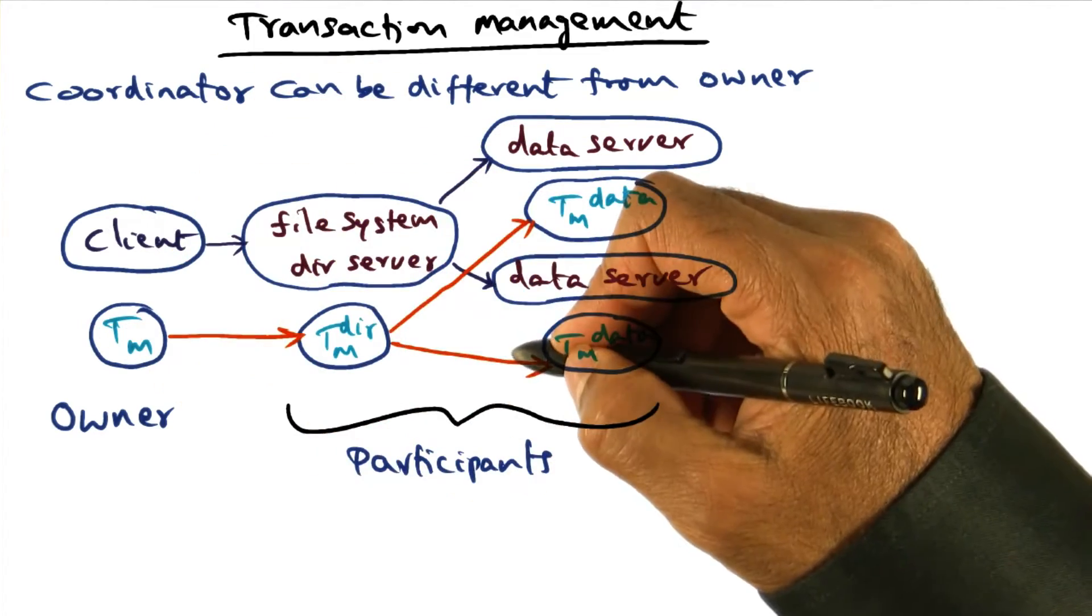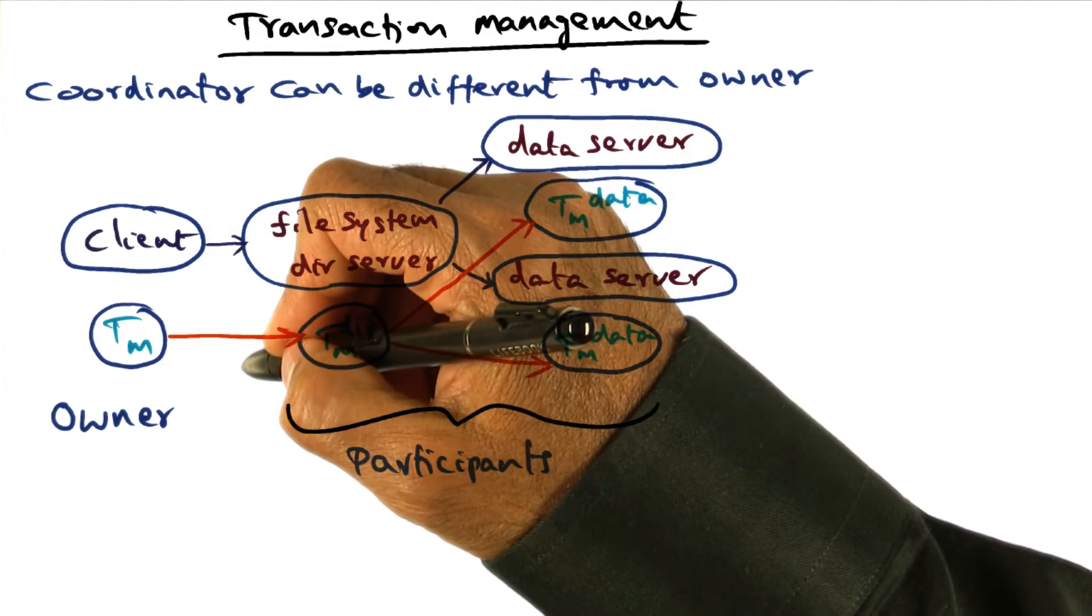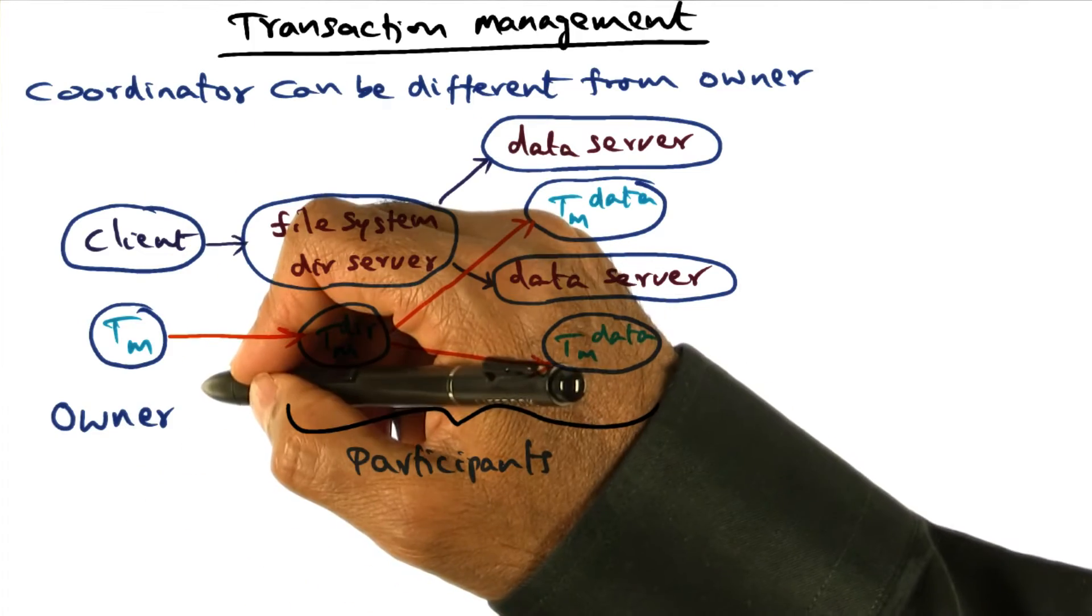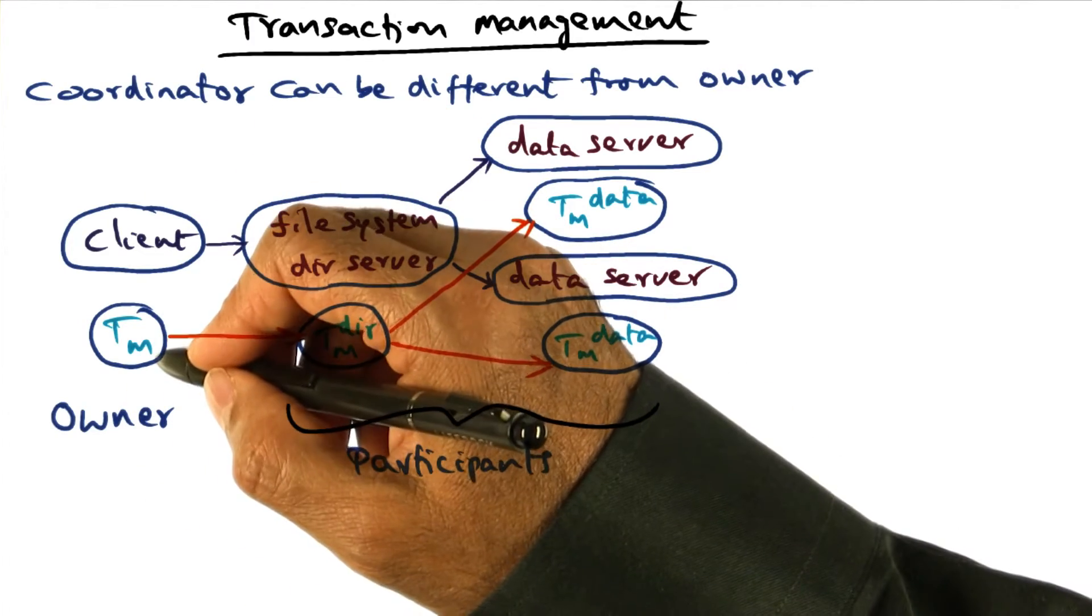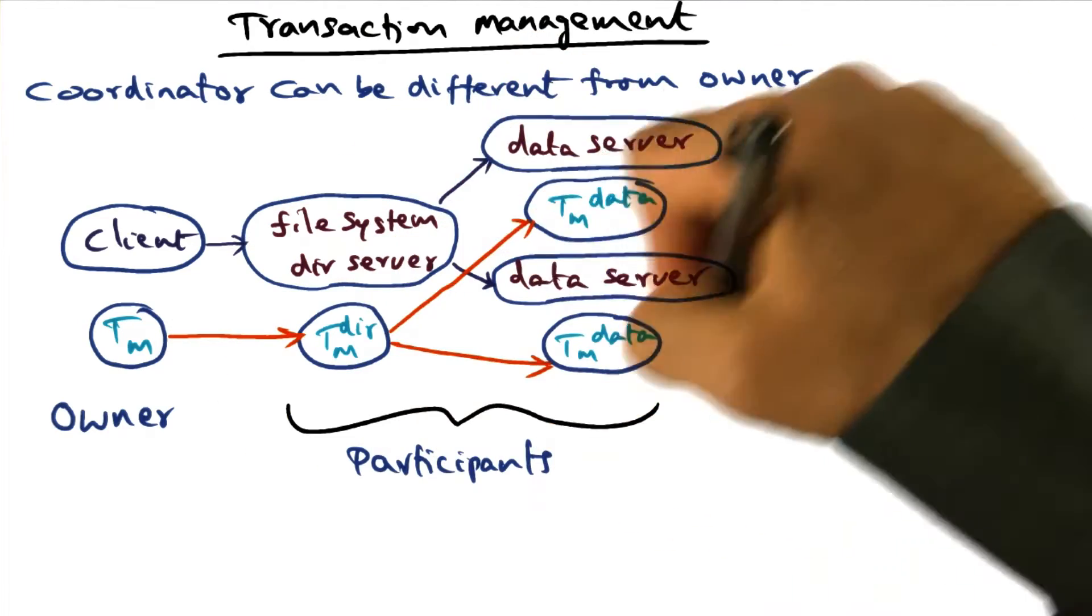If the root of the transaction tree is on a client node, then cleaning up the breadcrumbs may become hard if the client box goes away, because the owner will go away. That's the reason the owner can delegate the ownership to any node in the distributed system.